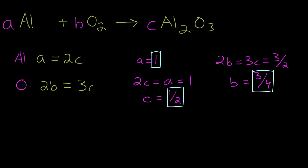So now we have a solution for each variable, but the problem is they're in fractions. So what we're going to do to fix that is we're going to find our greatest denominator, which is 4, and we're going to multiply each solution by 4. So A is going to be 4 times 1, which is 4. B is going to be 3 fourths times 4, which is 3. And C is going to be 1 half times 4, which is 2.